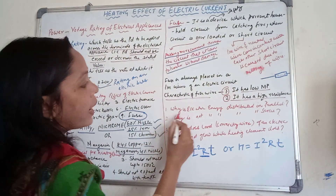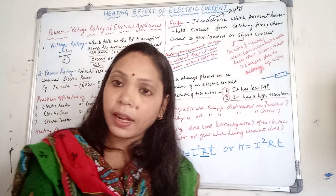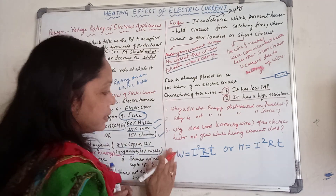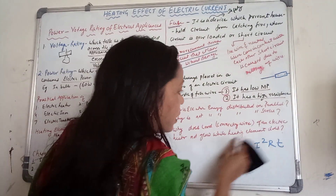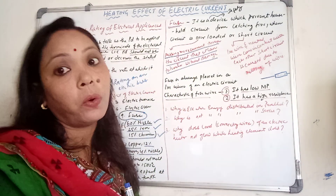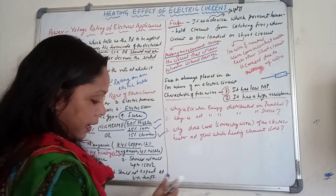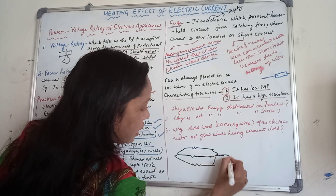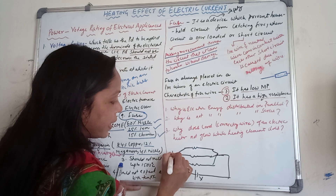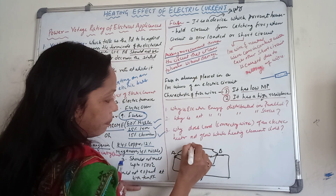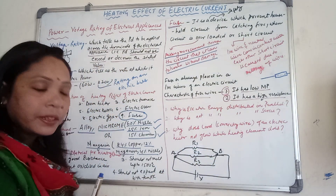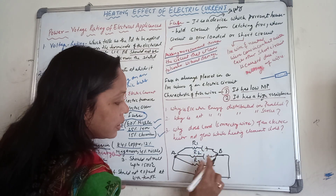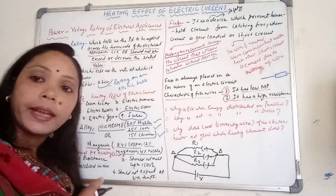Now, why is electric energy distributed in parallel in our household circuit? If we see all the connections, they are all parallel. The reason is that parallel combination has the same potential difference for all appliances. Also, in a parallel combination we can give an independent switch to each and every appliance — for example, separate switches for refrigerator, television, and electric toaster.